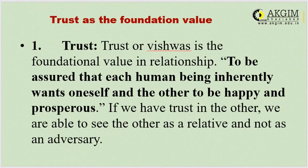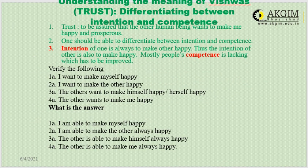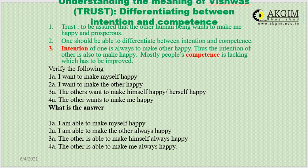We start with the first one — the foundation value — that is trust, known in Hindi as vishwas. Trust is to be assured that each human being inherently wants oneself and the other to be happy and prosperous. If we have trust in the other, we are able to see the other as a relative and not as an adversary. We should be able to differentiate between intention and competence — these are the two components of trust. Intention is always to make the other happy, and competence is the ability to fulfill that intention. Mostly people's competence is lacking, which has to be improved.